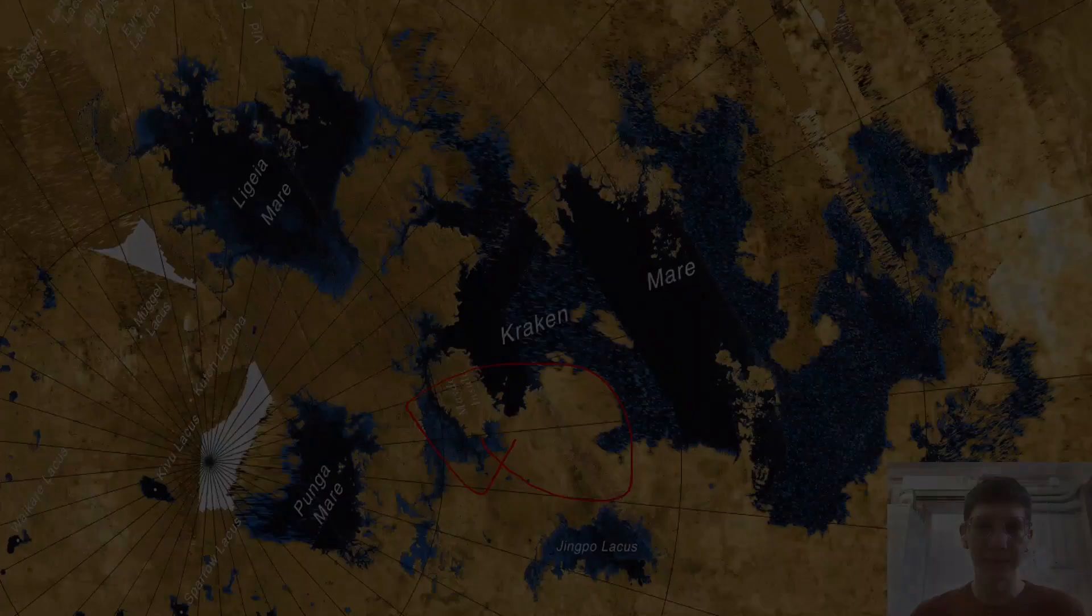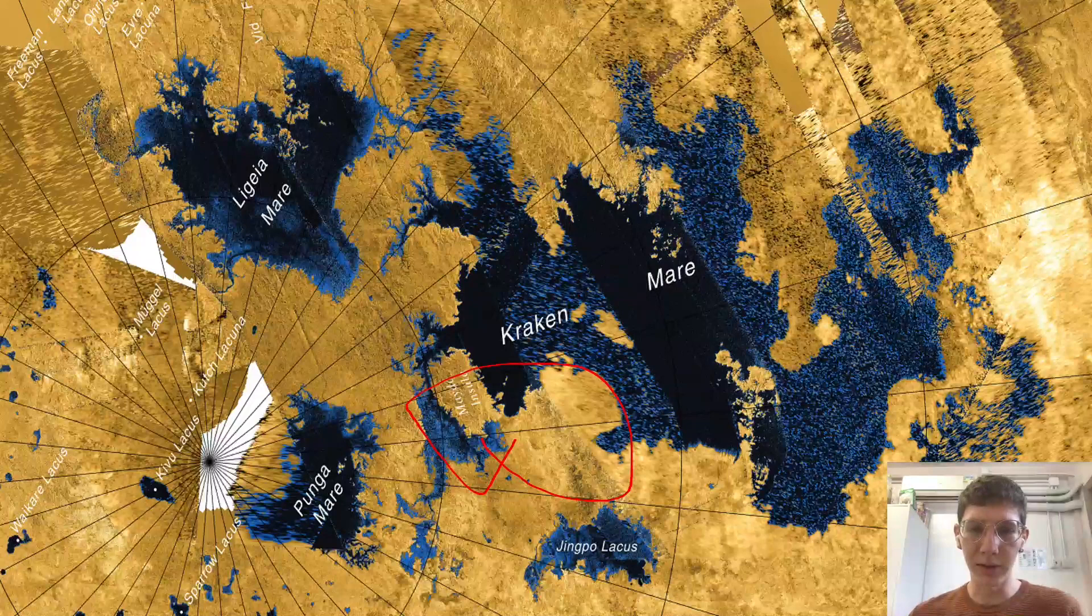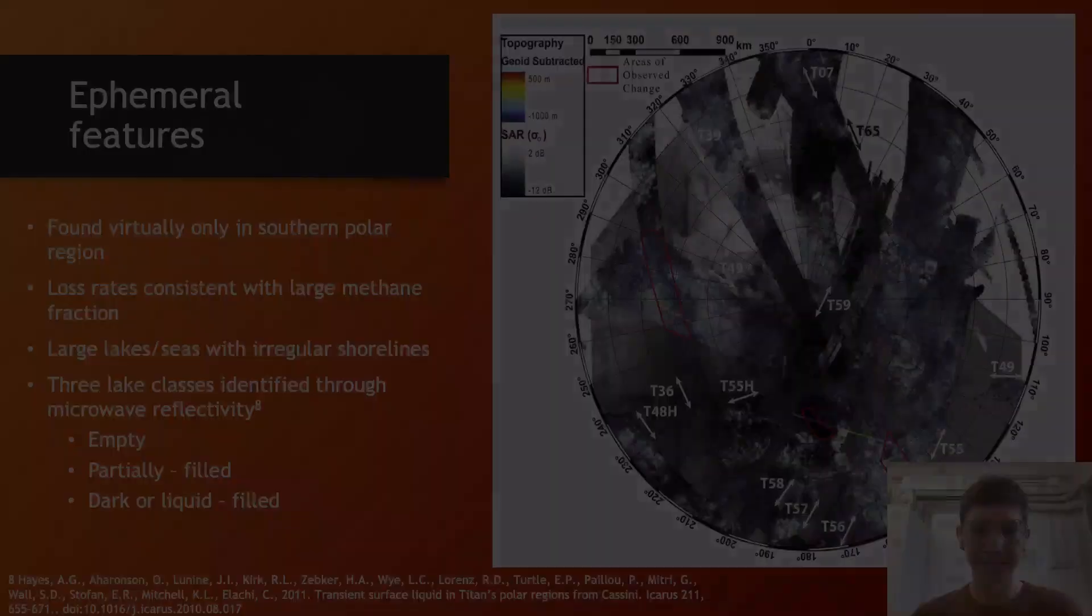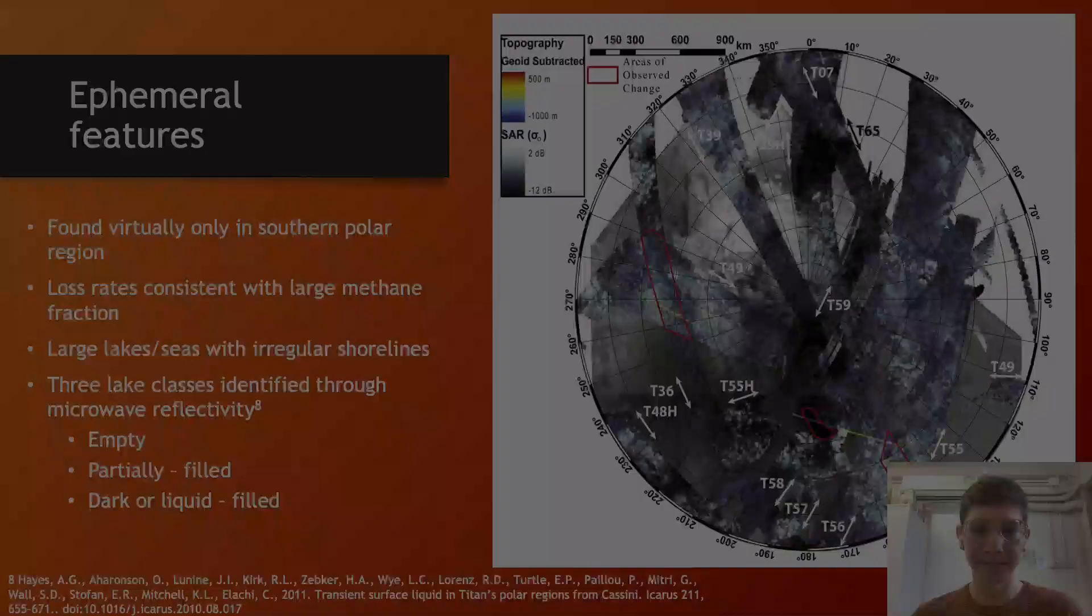So these are the major seas which contain 80 percent of the observed liquid-filled surface area and fill northern polar basins roughly between 50 and 100 degrees east. Northern regional variation can be explained by changes in observational geometry in contrast to southern ephemeral features. While much smaller lakes also exist elsewhere at Titan's north pole, these primary large features dominate and coincide with some of Titan's large-scale topographic depressions.